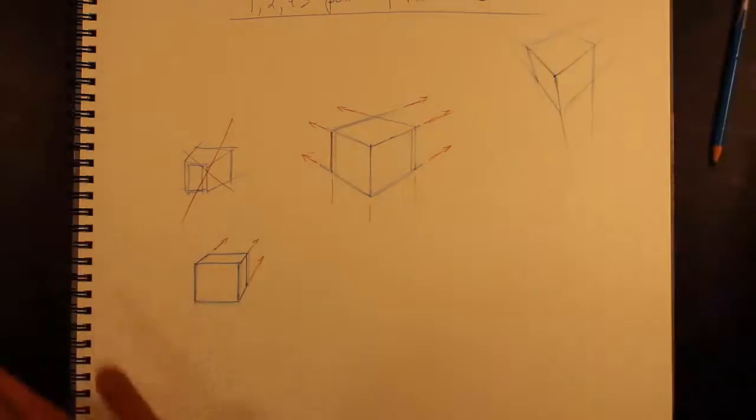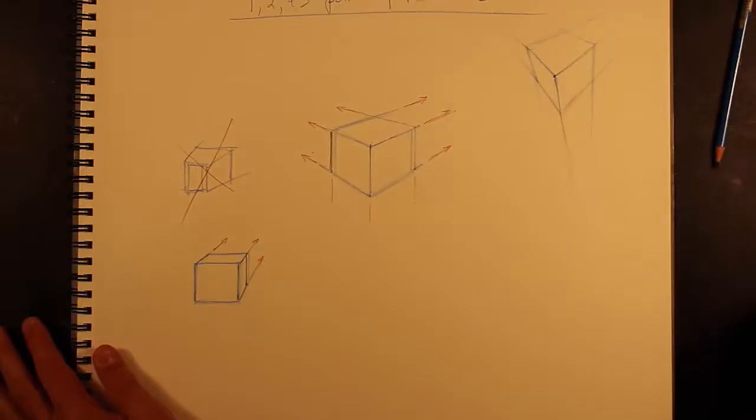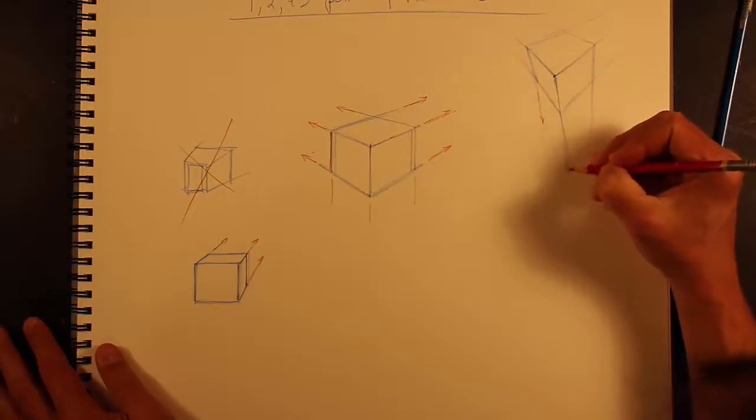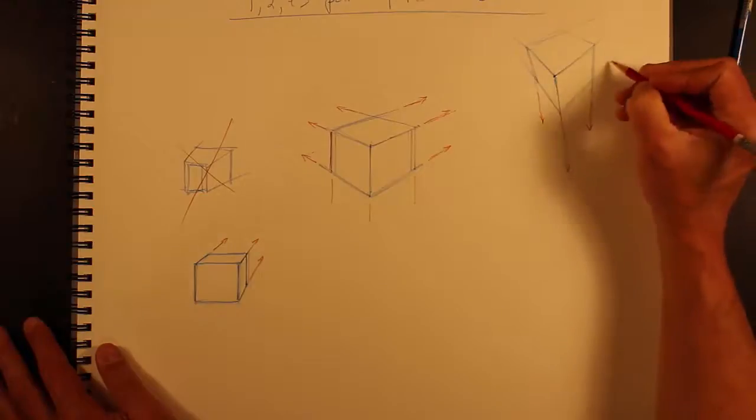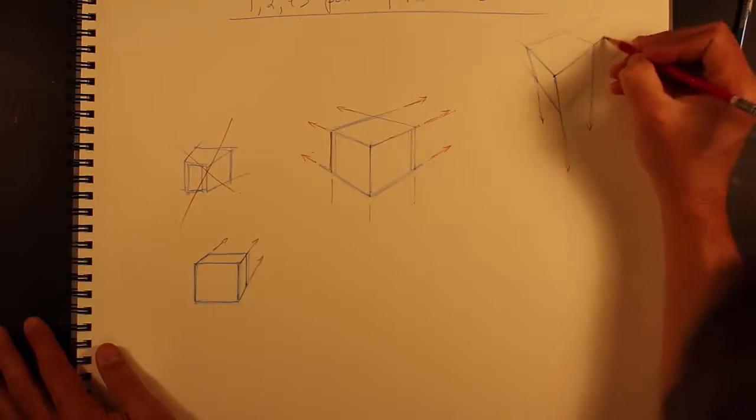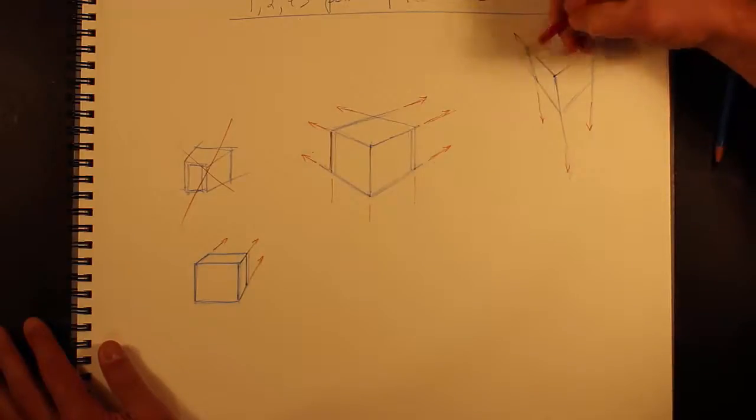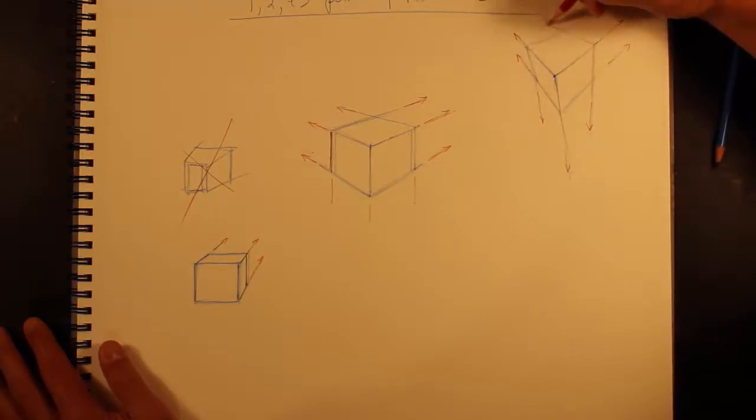So what you have at three-point are basically three sets of lines that are all going towards a vanishing point, so all the lines need to be tapering, converging. That is it.